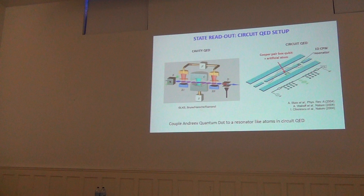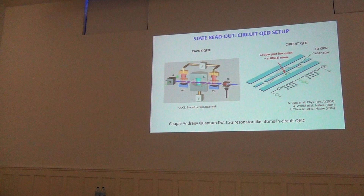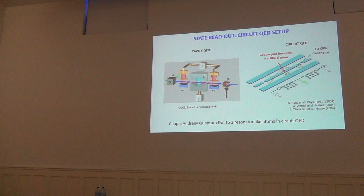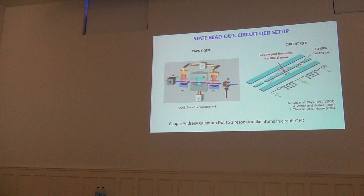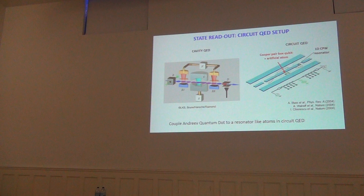Here in light blue is a microwave resonator — a coplanar waveguide resonator. The idea is that you have aluminium, or a superconducting metal for zero losses, and the electromagnetic field propagates in this line as if it were a coaxial cable built in a plane. The center conductor is the sole of the coaxial cable and the two sides are the ground planes. Interruptions in the line build standing waves at microwave frequencies — from 3 to 10 GHz.